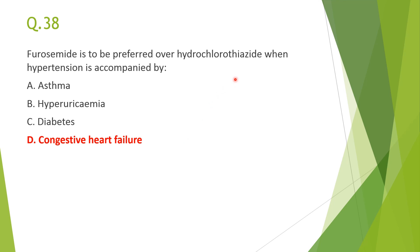Next: furosemide is preferred over hydrochlorothiazide when hypertension is accompanied by congestive heart failure, because furosemide is a high-ceiling diuretic causing greater reduction in preload and pulmonary edema — more efficacious in amount compared to hydrochlorothiazide. In the other three conditions, diuretics are not preferred.